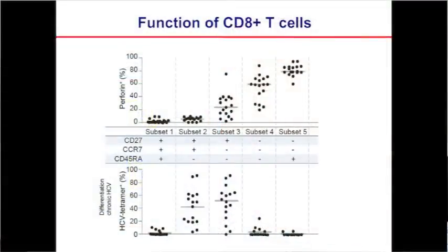When we looked at the expression of perforin in all T cells, we found that perforin expression is highest on late differentiated T cells. Interestingly, HCV-specific CD8+ T cells are stuck in an early differentiation stage. Thus, the low expression of perforin on HCV-specific CD8+ T cells really seems not to be a mechanism of T cell failure, but rather caused by the early differentiation stage these T cells are in.